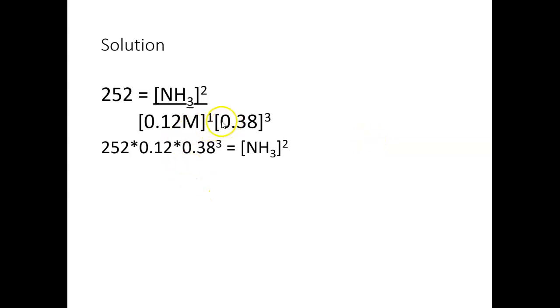I rearrange by multiplying both sides by 0.12 times 0.38 cubed over 1. So those are going to cancel. 252 times 0.12 times 0.38 cubed—you see that here—that's going to equal my ammonia squared.